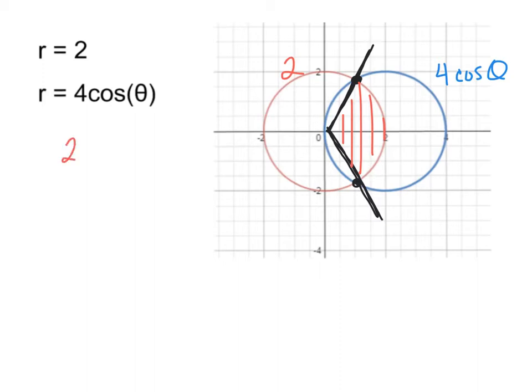So 2 equals 4 cosine theta. We're going to set the two equal to each other. We're going to divide both sides by 4 because remember our bounds are going to be angles. So we want to know what theta is. So we're looking for where cosine is equal to 1 half. Well, cosine is equal to 1 half at pi over 3.